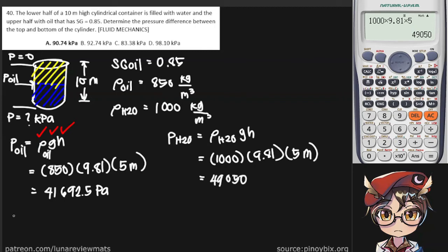So now, the pressure at the bottom of our tank is simply the addition of the oil pressure and the water pressure. So we can add that directly here and divide by 1000 to make it in kilopascals. And we have our final answer of 90.74 kilopascals.